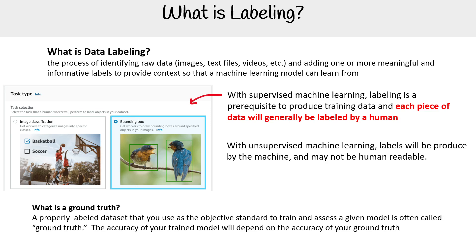Then there's this concept of ground truth. This is a properly labeled dataset that you use as an objective standard to train and assess a given model, and is often called ground truth. The accuracy of trained models will depend on the accuracy of your ground truth, so ground truth data is very important for successful models.